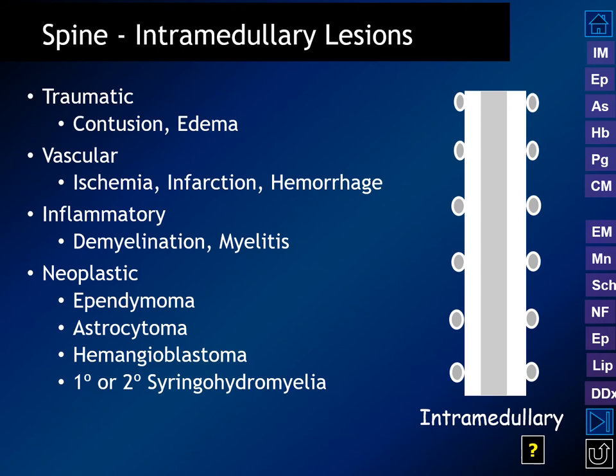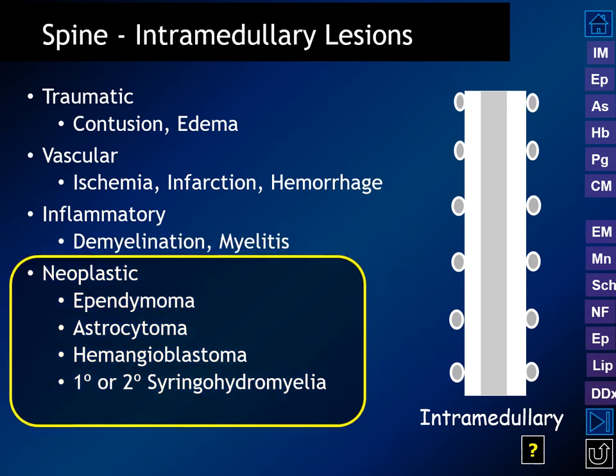The differential diagnosis for intramedullary lesions includes major disease categories: traumatic lesions like contusion and traumatic edema; vascular lesions including ischemia, infarction, and hemorrhage; inflammatory lesions like demyelination and myelitis caused by infection; and neoplastic processes, which we'll discuss in detail.